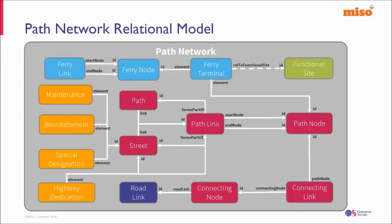On the path network model, path link and path node are separate. The path node gives you the connection to the connecting link, and the connecting node links back to the road link — allowing you to build walking or cycling networks. The ferry terminal also has a reference to the functional site, which is part of the Sites layer in OS MasterMap Topography Layer — essentially a red line around all the objects that make up that terminal.